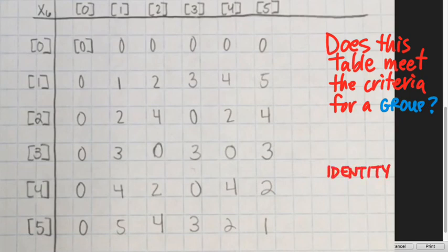What is or does this group have an identity element? Yes, it does. What is its identity element? One. And why is one an identity element? How can we tell from this table that one is an identity element for this group?